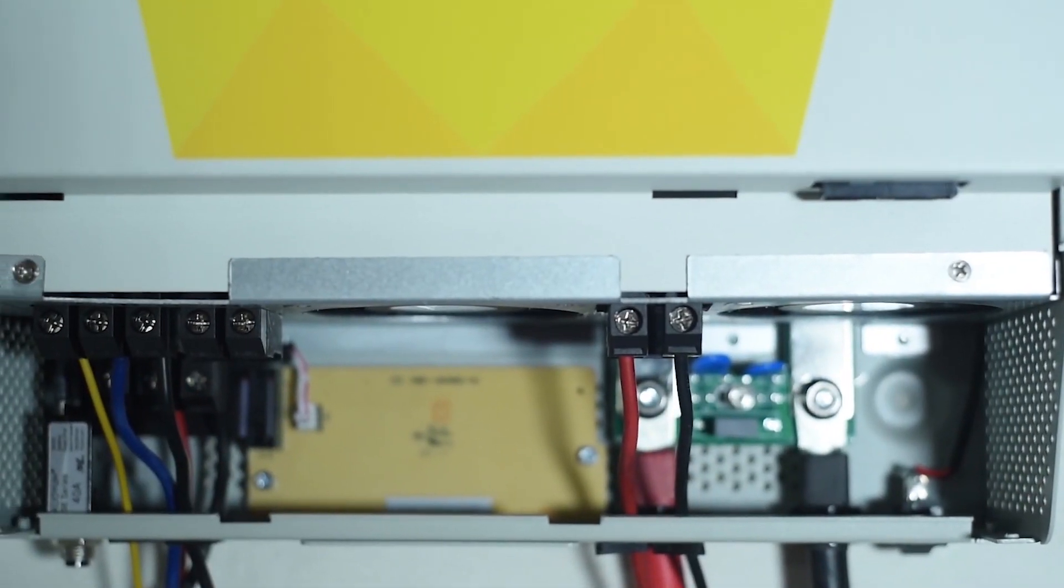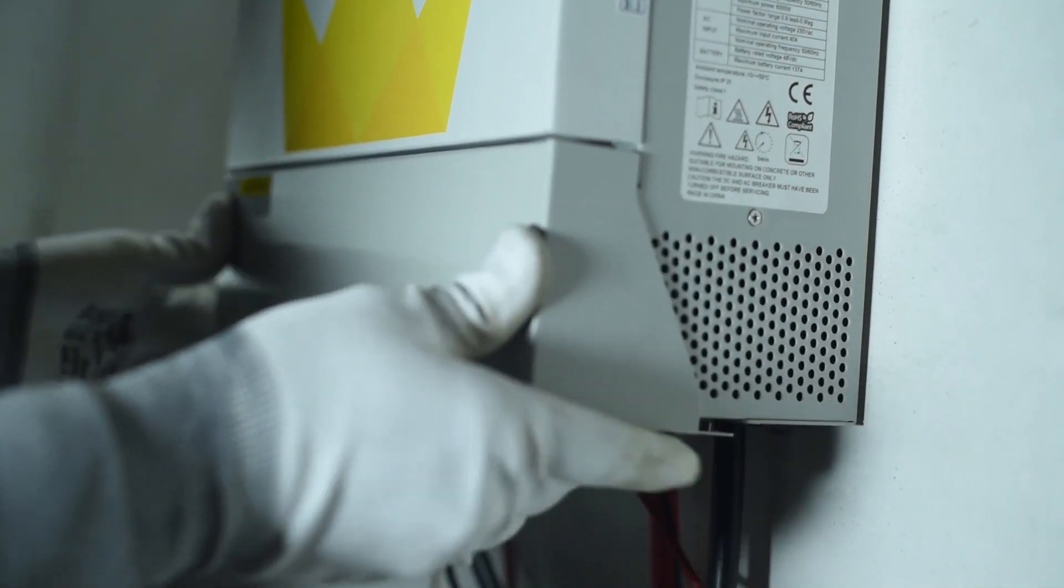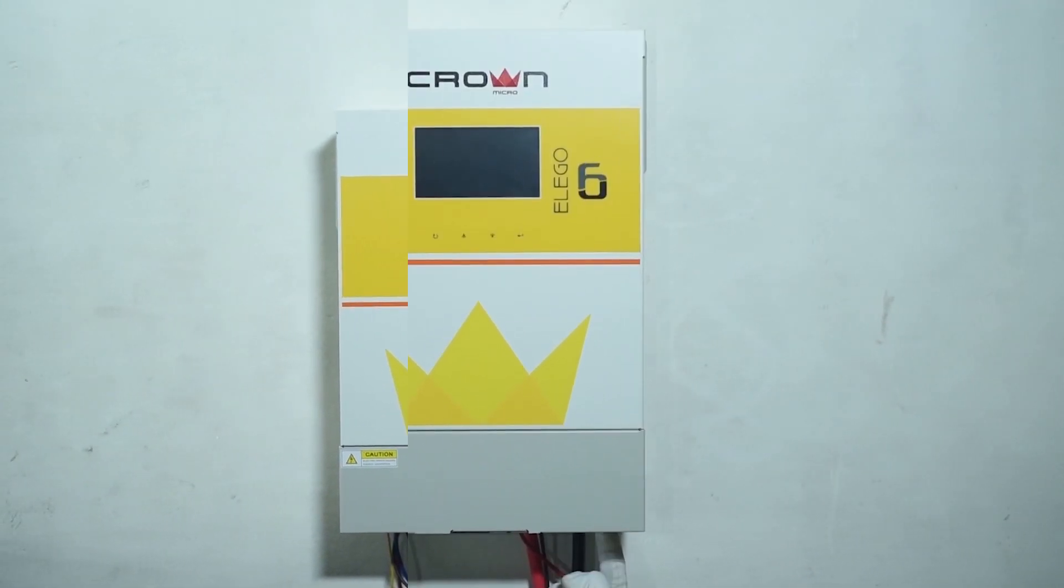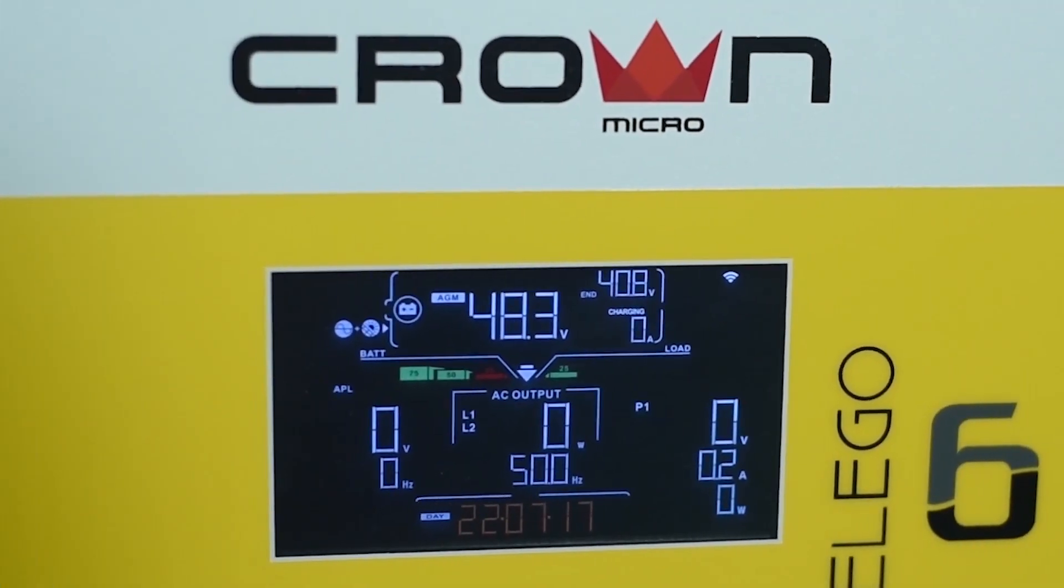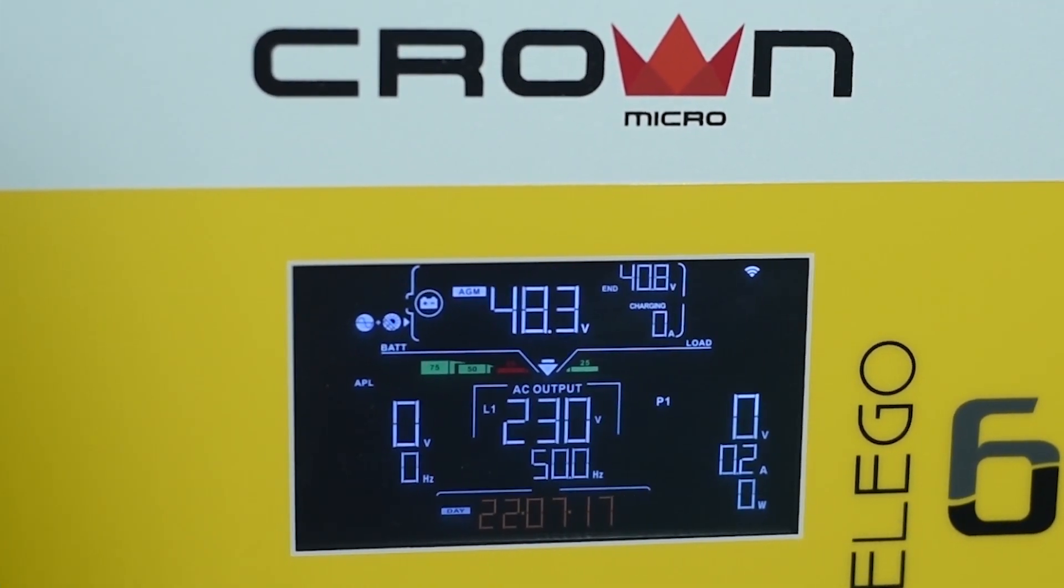Check all connections, then lock the service panel with screws. Now La Go 6 has been fully installed. Press the button to switch on the inverter. Do a simple system setting via the LCD screen.